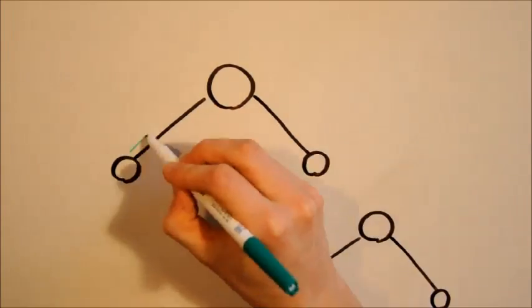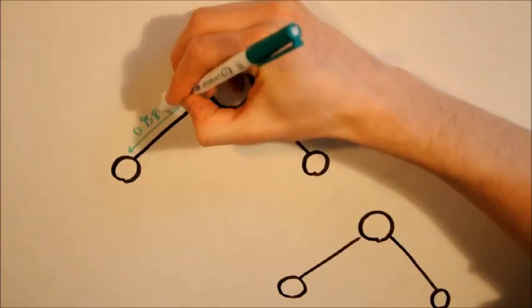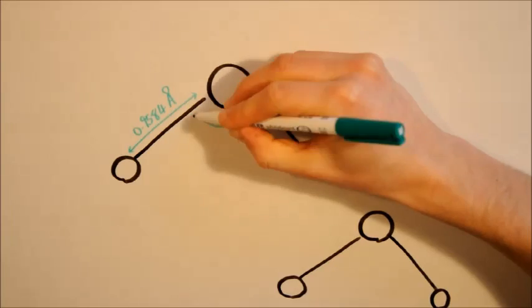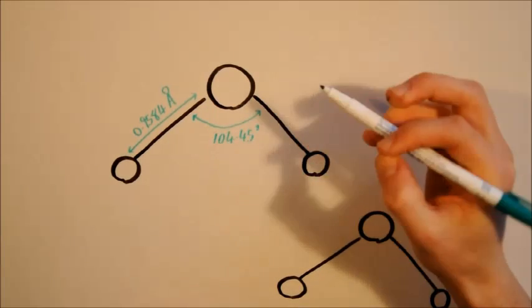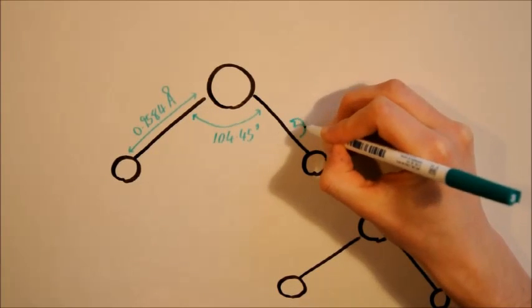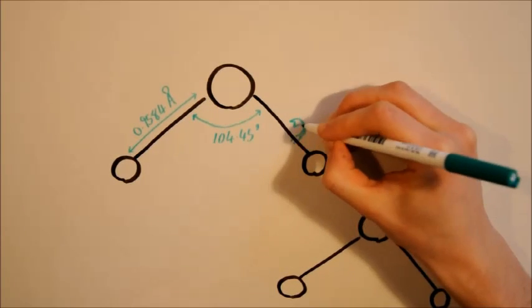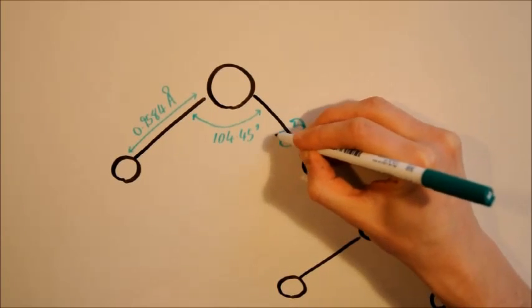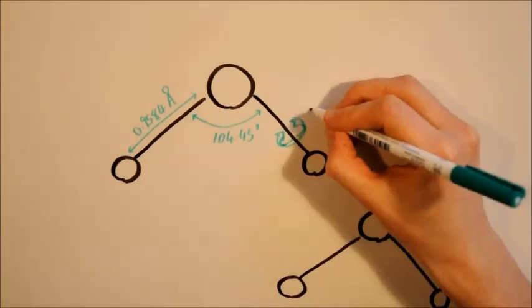So, what can it do? Well, it can tell you almost everything you want to know about your material: its bond lengths and angles, torsion angles, non-bonded distances, and often what type of atom you're looking at.